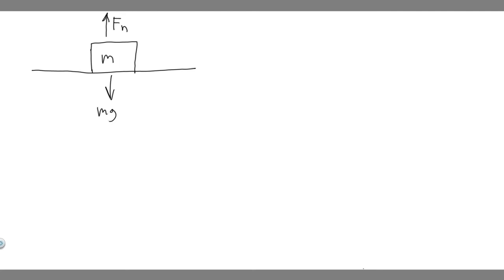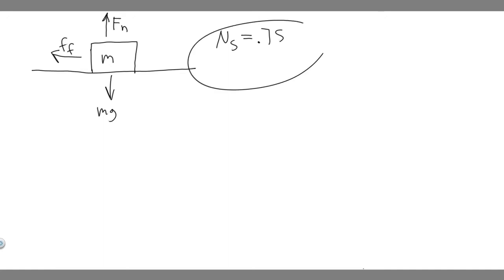We also have the force of friction, because they tell us that mu sub s is equal to 0.75. The force of friction is going in the opposite direction — it's going to the left, making it harder for the crate to move and hit the truck. Now that we have these labeled, what we're going to be doing is solving for acceleration. They want us to find the rate at which the driver can decelerate.